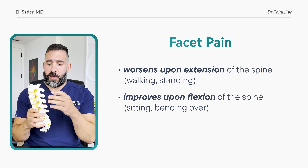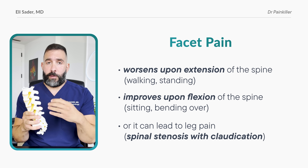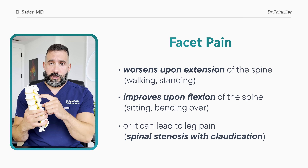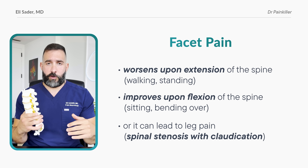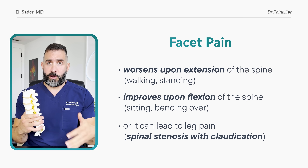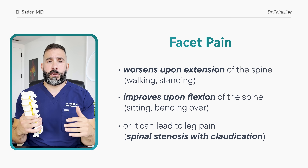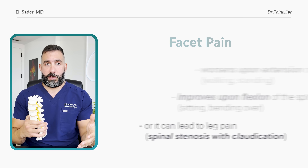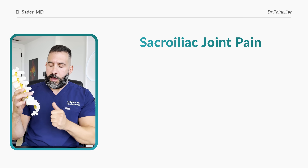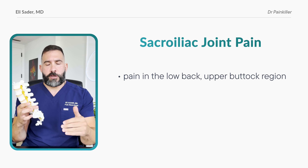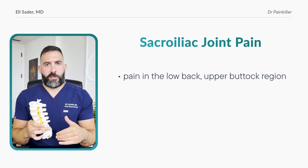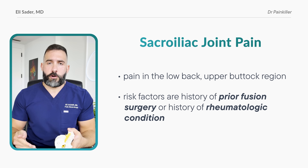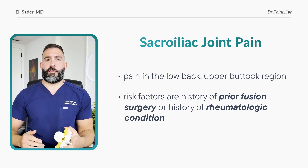With facet pain, it can be in the back itself or lead to a referred pain pattern in the thigh. If the arthritis gets worse it can compress the nerves and lead to spinal stenosis — what we call neurogenic claudication — where patients feel heaviness, numbness, or weakness in their legs when walking. Finally, sacroiliac joint pain is in the low back and upper buttock region and tends to occur when sitting. It's most common in patients with a history of prior lumbar fusion surgery or a rheumatological condition.